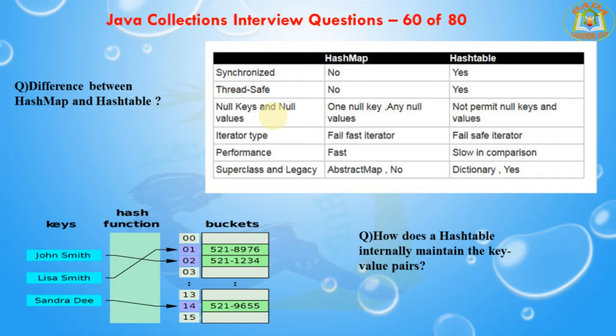In HashMap, one null key and multiple null values are allowed; in HashTable, null keys and null values are not allowed. HashMap has a fail-fast iterator and HashTable has a fail-safe iterator. HashMap performance is very high and HashTable performance is very low compared to HashMap. The superclass of HashMap is AbstractMap and the superclass of HashTable is Dictionary.